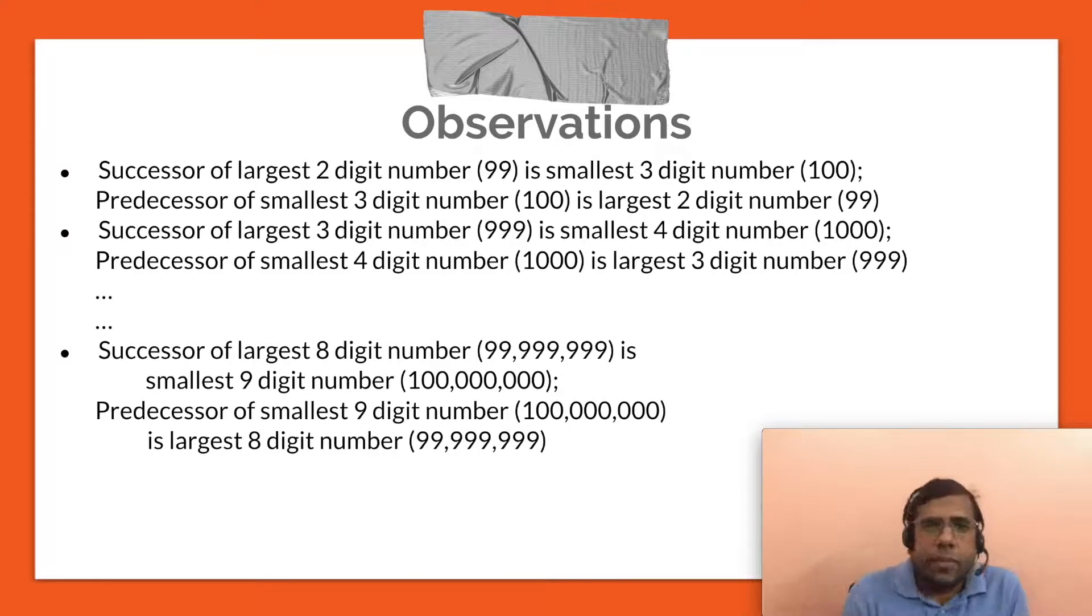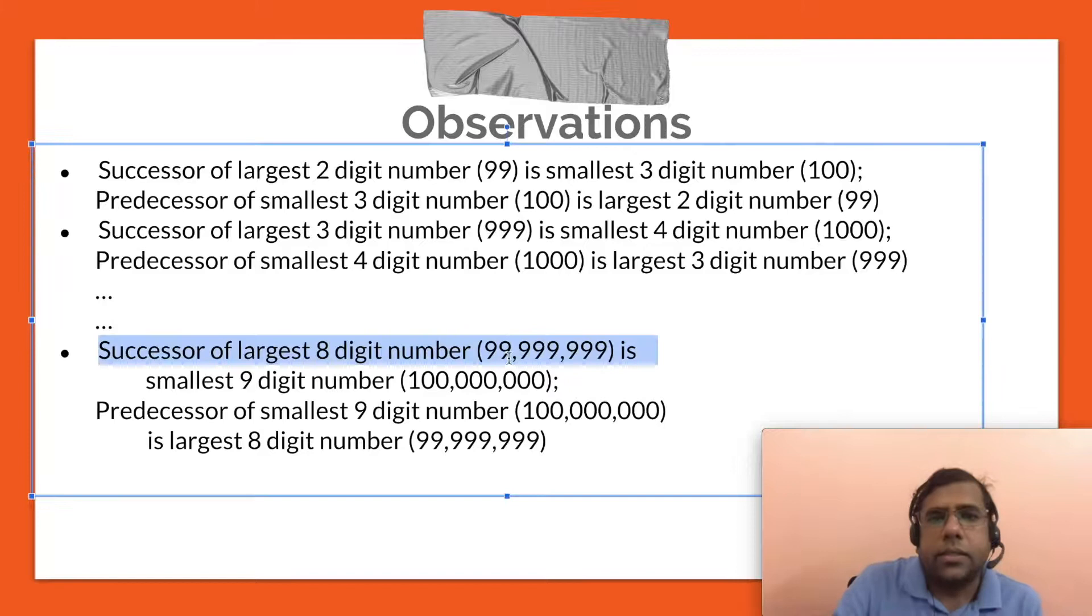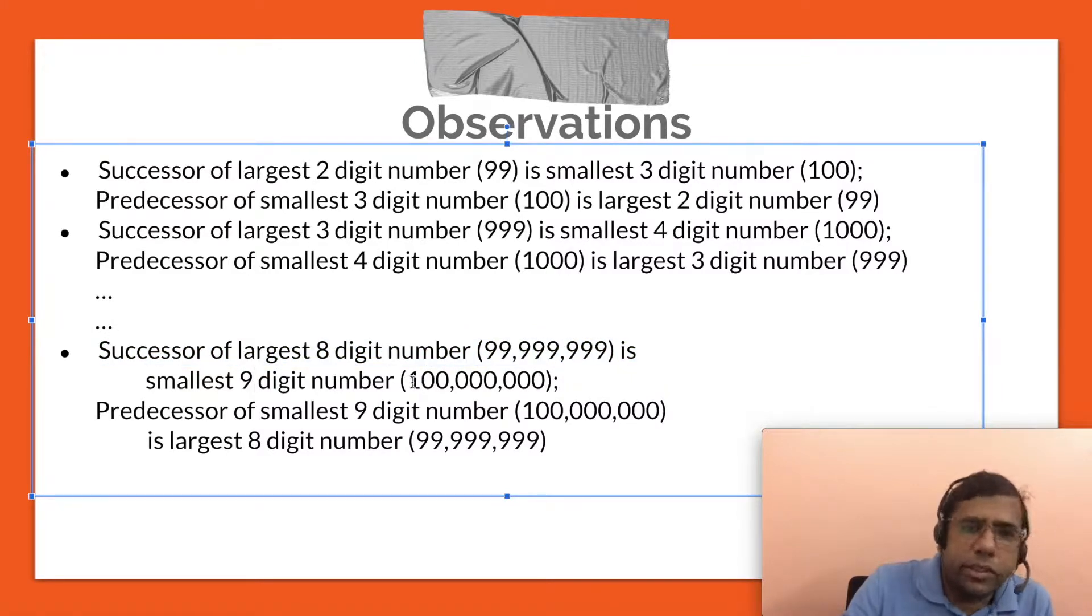So successor of the largest two digit number is the smallest three digit number. Because if you add to the largest two digit number, that's 99, if you add one to that number, you get its successor, which is 100, which is the smallest three digit number. And similarly, predecessor of 100 is 99. So the predecessor of smallest three digit number is the largest two digit number. This is a property worth remembering. And this extends to any number of digits. So the successor of largest eight digit number, that's nine repeated eight times, is the smallest nine digit number, which is 100 million. And the predecessor of smallest nine digit number, that is 100 million, is the largest eight digit number, which is 99,999,999.